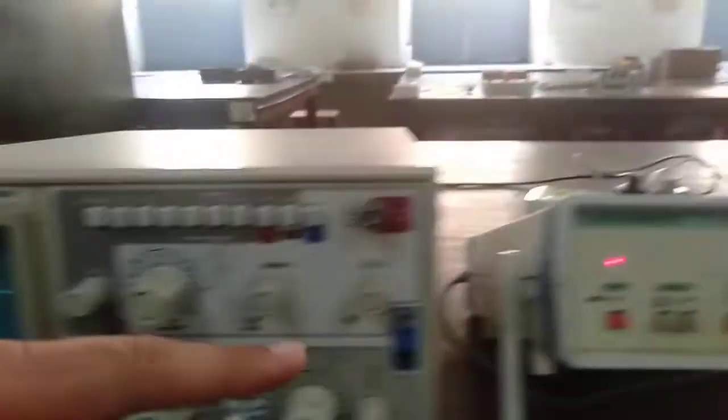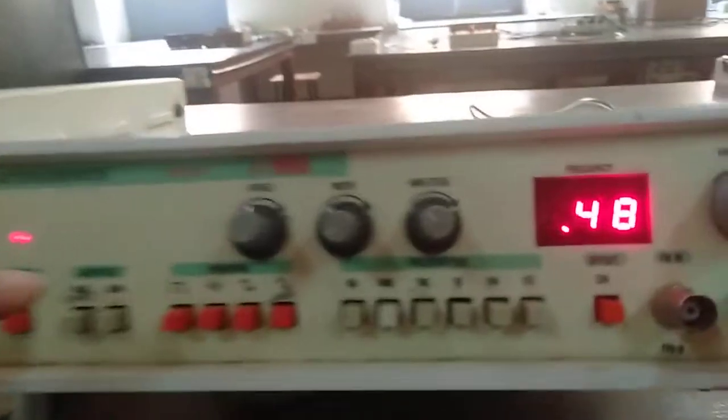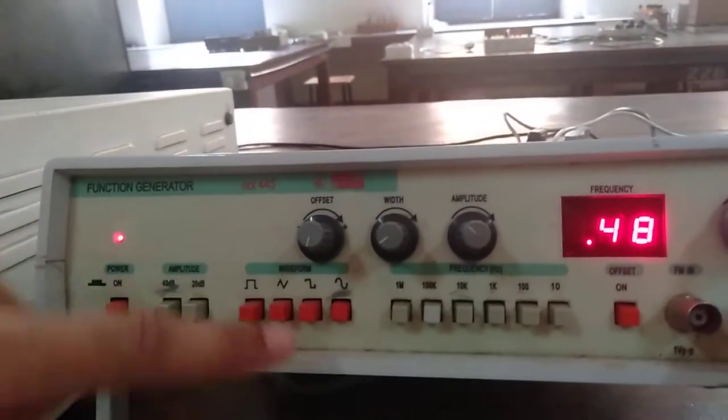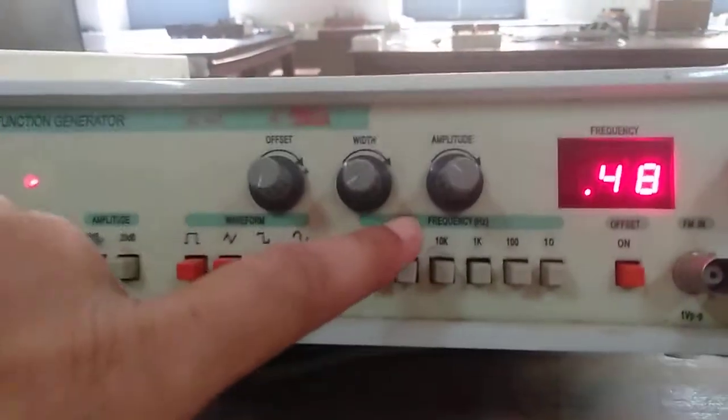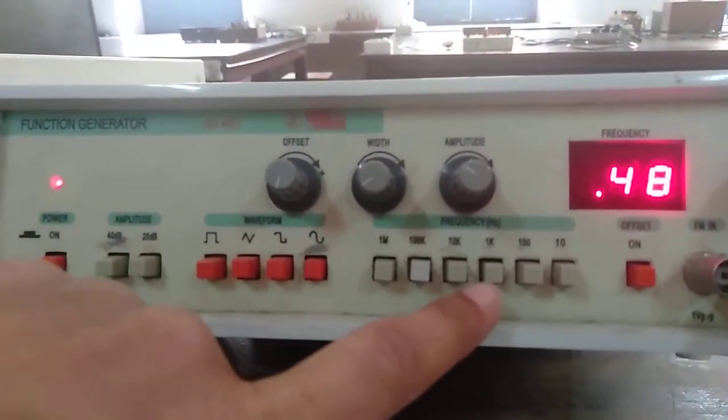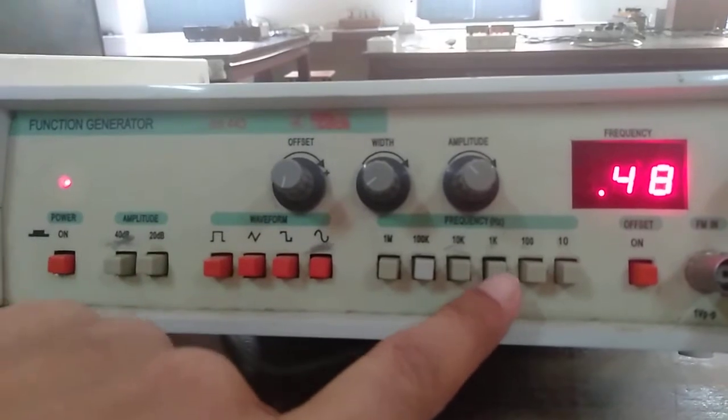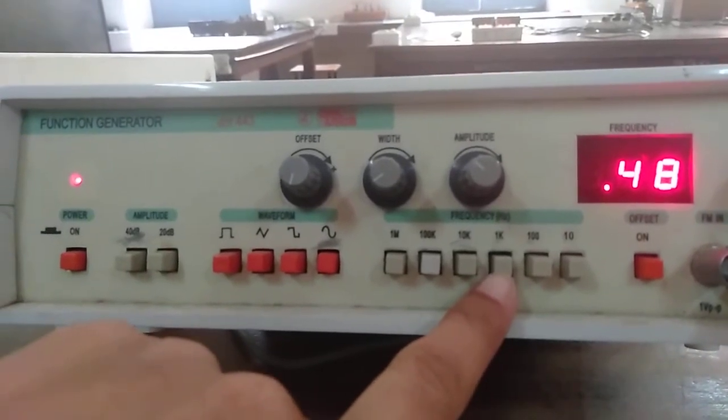Going to the function generator, since we make use of sinusoidal wave, the waveform knob that has to be pressed here is the sinusoidal waveform and the frequency that we require here is up to 1 kilohertz. That is why I have just pressed knob 1k.